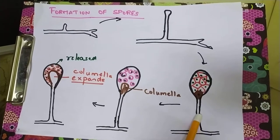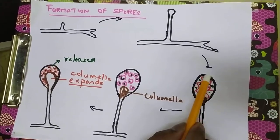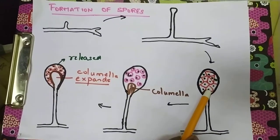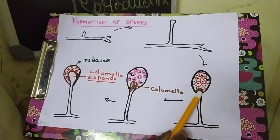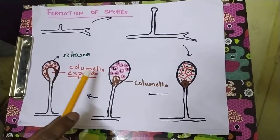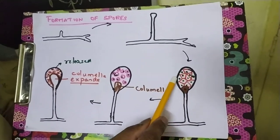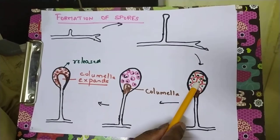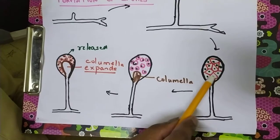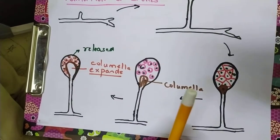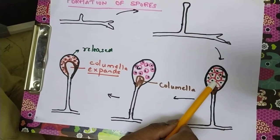All the cytoplasmic contents will flow into the vesicular structure and many nuclei will be present inside the sac-like structure. Another small vacuole develops and keeps on expanding. The main concept of spore formation is cytoplasmic cleavage — that means the cytoplasm will cleave into small bits and pieces, and each bit carries one nucleus in it.